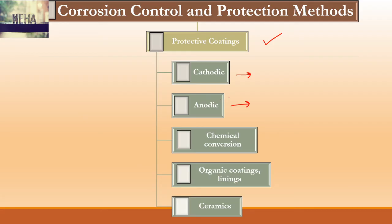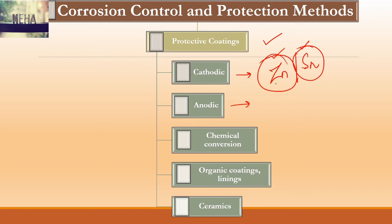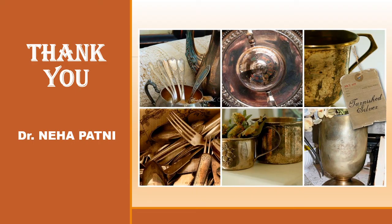Now, based on the difference between cathodic and anodic coatings, can you tell me whether galvanizing is preferred over tinning, or tinning is preferred? Coating with zinc versus coating with tin — one is a cathodic coating and one is an anodic coating. Please mention in the comments which is preferred. Other coating types include chemical conversion coatings, organic coatings and linings, and ceramic coatings. I hope you understood today's topic on coatings for corrosion protection. If you found it helpful, please like and subscribe.